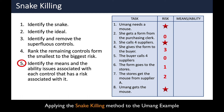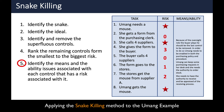The last step is identifying the means and ability associated with each remaining control. For the first risk — form goes to stores — Umang should keep some purchasing request forms at her desk and needs the authority to order stock. For the second risk, she needs the authority to receive stock and must understand how the receiving process works. Finally, because of the oversight role the buyer plays, that should be the last control removed — and to do so, Umang needs to be enabled in both the purchasing policy and procedure.